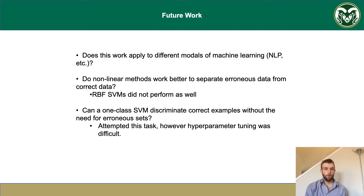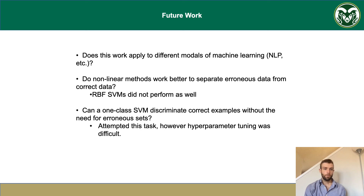For future work, we could look at natural language processing to see if we achieve the same results in different modalities of machine learning. We could also look at more nonlinear methods and test the blessing of dimensionality hypothesis. We did find that radial basis function kernels did not perform well with the SVMs, but we did not explore more nonlinear techniques. Also, can a one-class SVM discriminate correct examples without the need for erroneous sets?